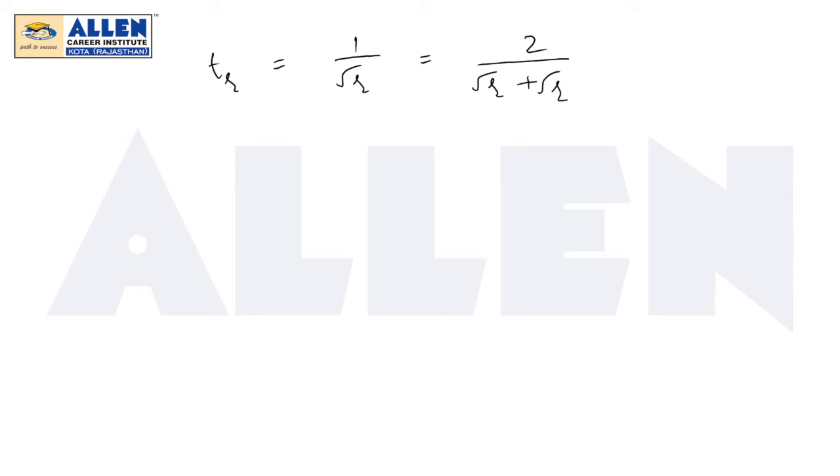Now it will be greater if I replace 1 root r by greater term, that is root under r plus 1. Upon rationalization it will yield 2 into root under r plus 1 minus root r.